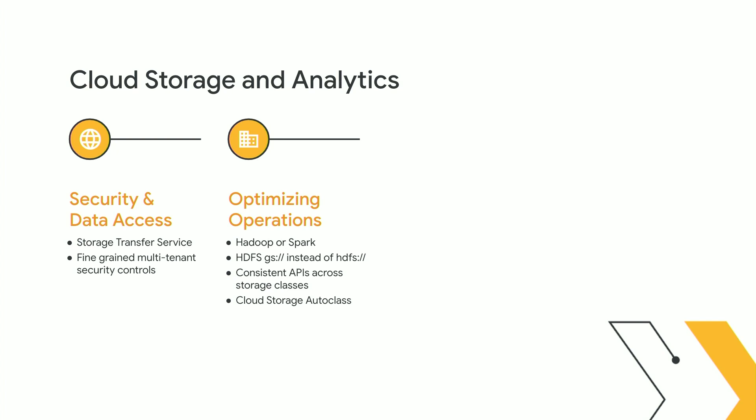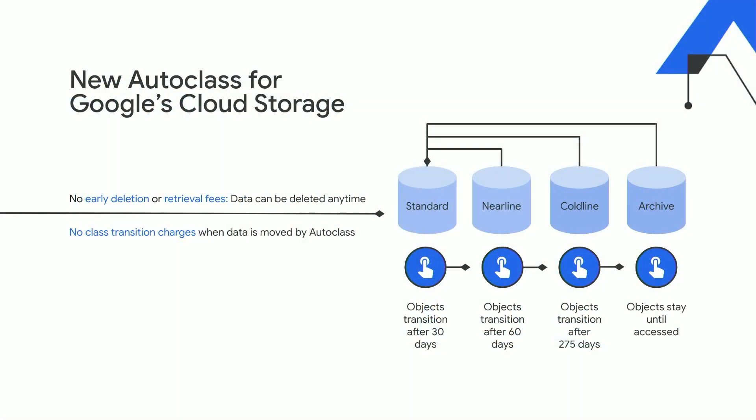We're also focusing on response time — one of the most important things from an analytics perspective is consistent millisecond response time from standard all the way down to archive, and with Google Cloud Storage you can do exactly that. For operational simplicity, every organization is trying to reduce costs. With AutoClass, you hit the easy button: turn it on at the entire bucket level — whether millions, billions, or trillions of objects — and it automatically migrates objects from one storage class to another by policy, with no deletion or retrieval fees for early deletion.